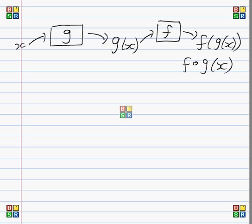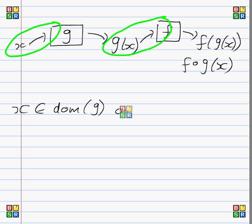Firstly, we need to be able to put x into the function g. And secondly, we need to be able to put g of x into the function f. So now there's two conditions for this whole composite function to work. So in other words, x must be an element of the domain of g.